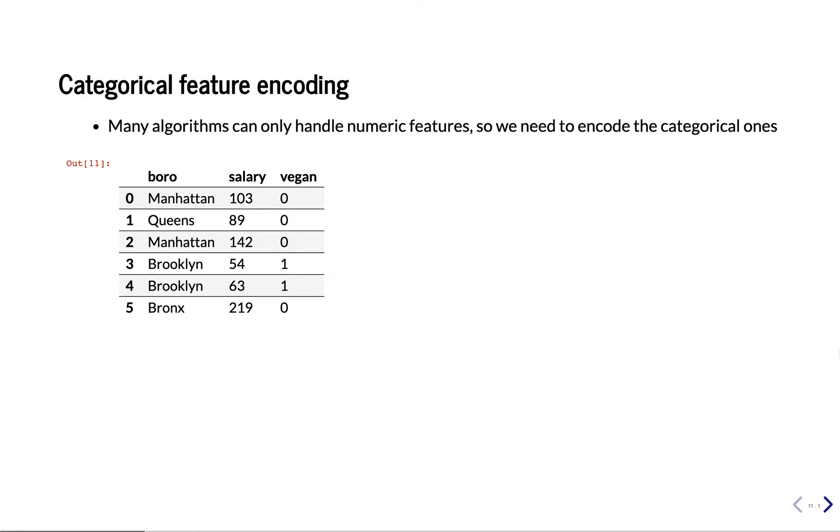Hello, this is Joaquin van Schoeren. Welcome to part 2 of our lecture on data preprocessing. In the previous lecture we saw how scaling and power transforms work. Now we look at categorical features.